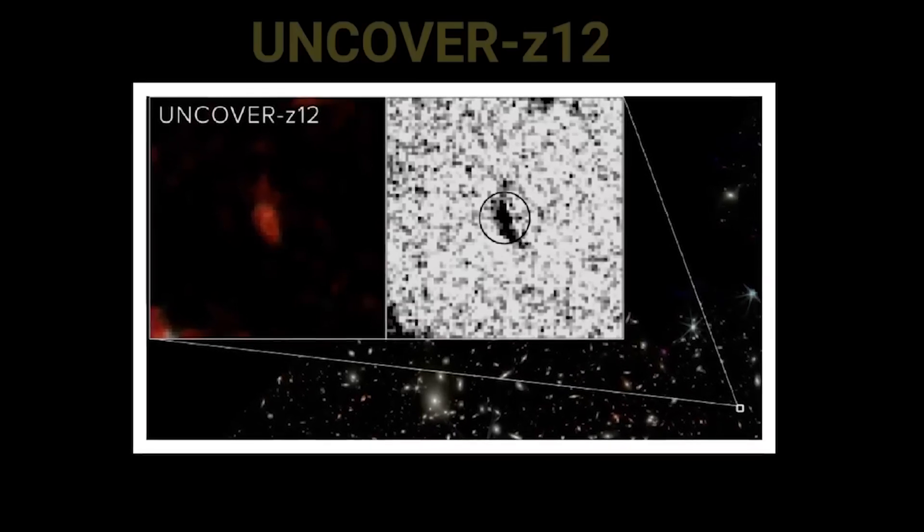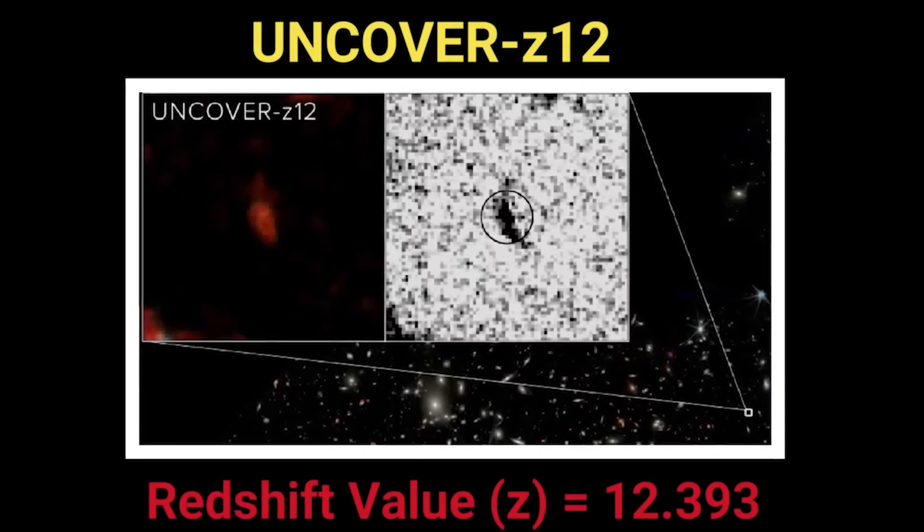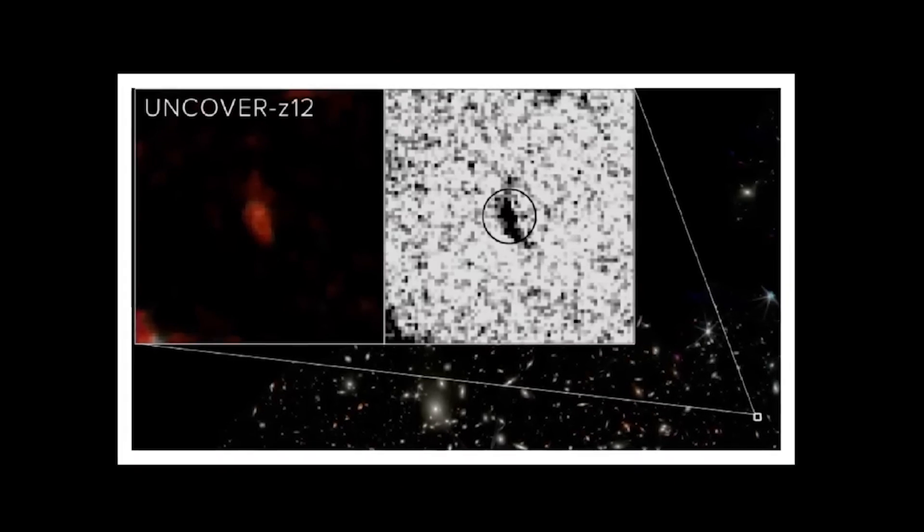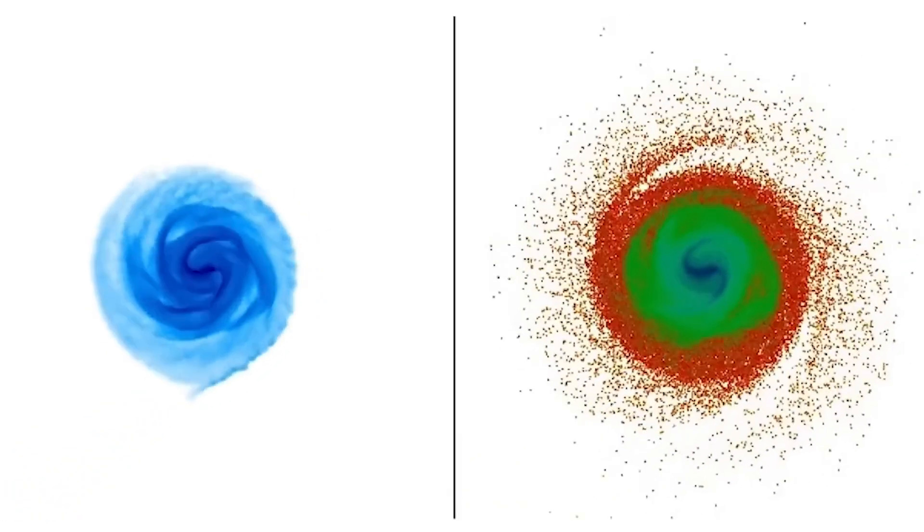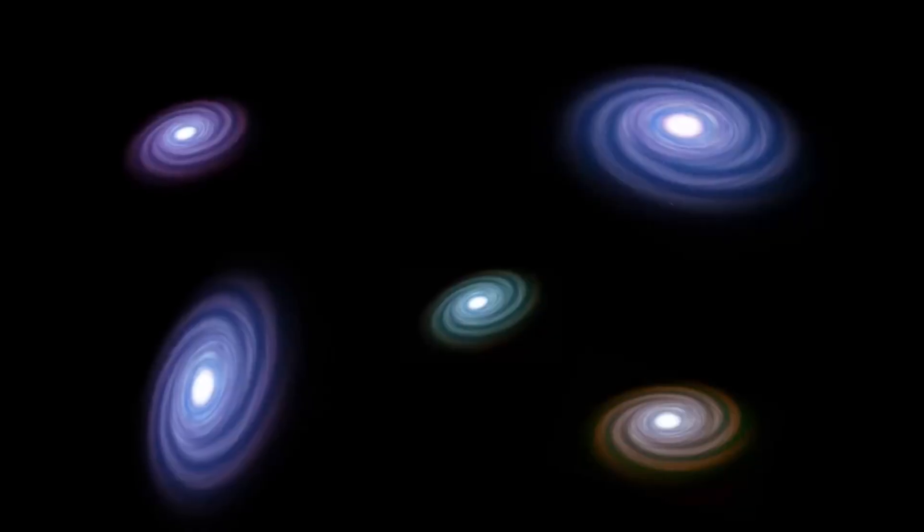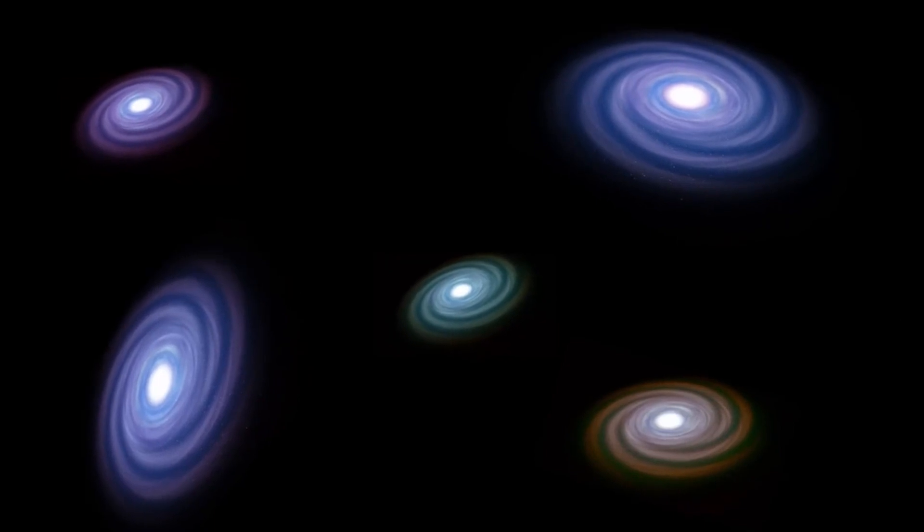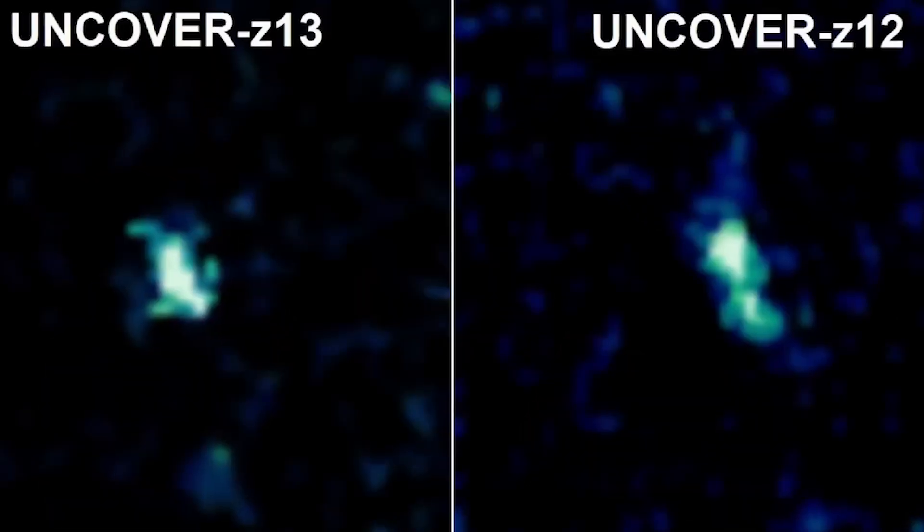The second, recently discovered Uncover Z 12, possesses a redshift of 12.393, positioning it at a mere 350 million years post the Big Bang. Notably, what sets these two galaxies apart from others at similarly high redshifts is their structural complexity, in contrast to the typical point-like appearance indicating smaller size.